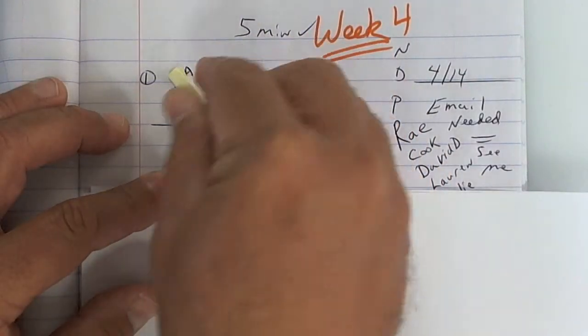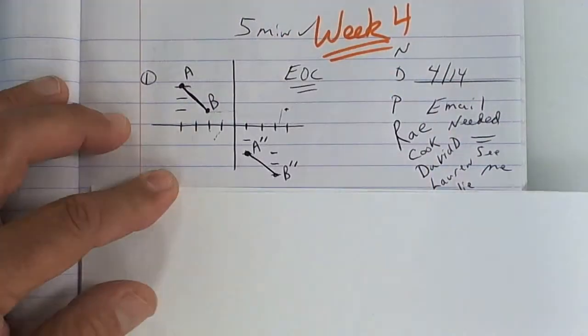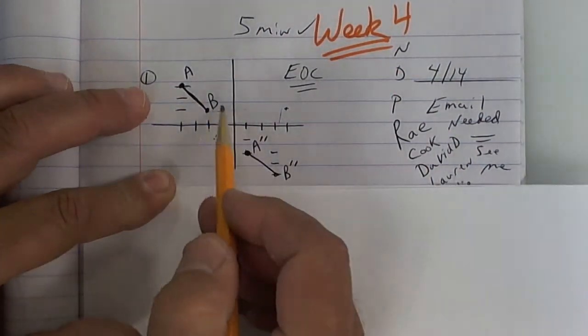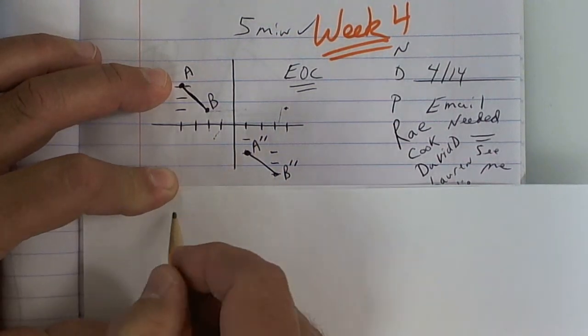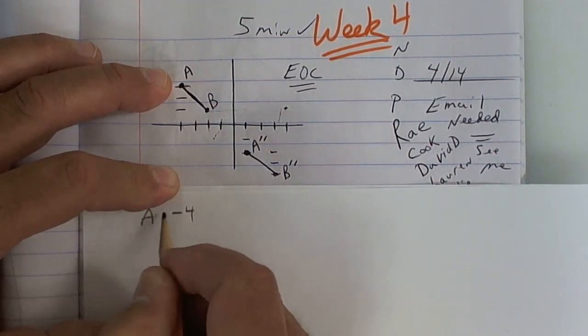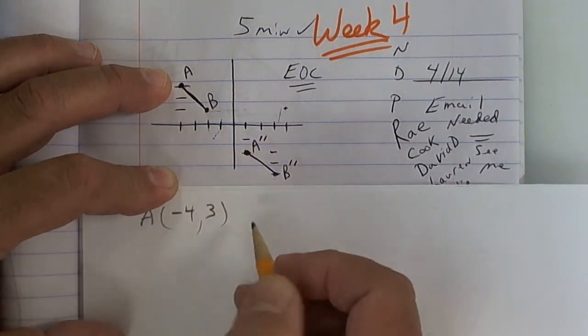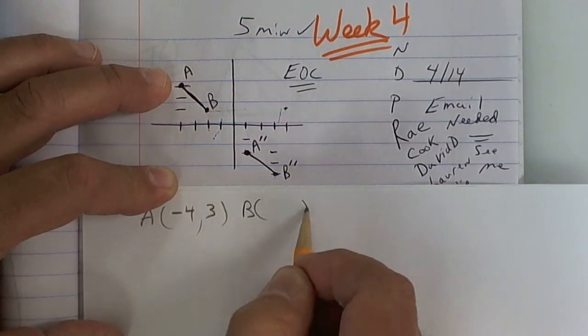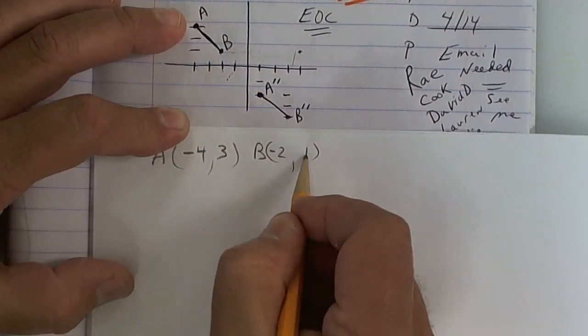All right, so here we go. This is how you do it. If you move it to the right, you're changing the x value. So watch. This point right here is located at 1, 2, 3, 4. So it's negative 4, and then up 1, 2, 3. Point B is located at negative 2, up 1.